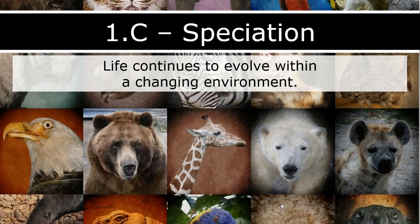As we've continued to talk about evolution, we've talked about the process of natural selection and how that can lead to changes between organisms. Those changes can allow some individuals to have a higher fitness, and thus their traits — their adaptations — will perpetuate within a population and continue to be passed on.